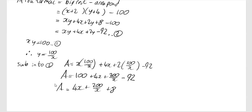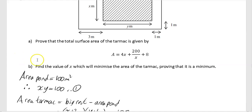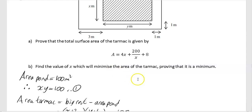We're now on to Part B. It's good exam technique to note: even if you couldn't get Part A, you can still get full marks for Part B because they've given you the starting expression. Part B asks: find the value of x which will minimise the area of the tarmac, proving it is a minimum.